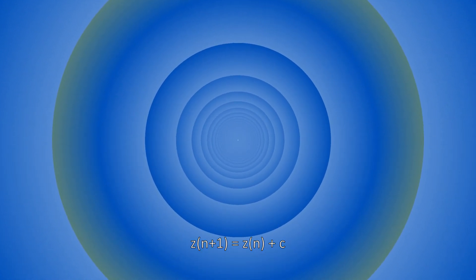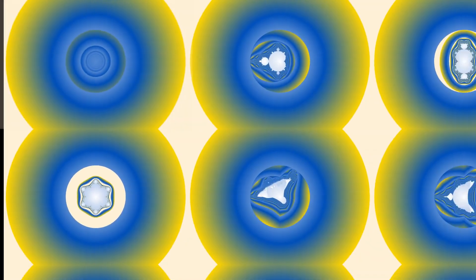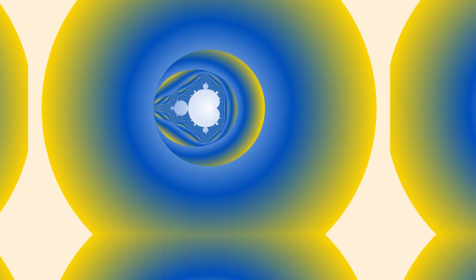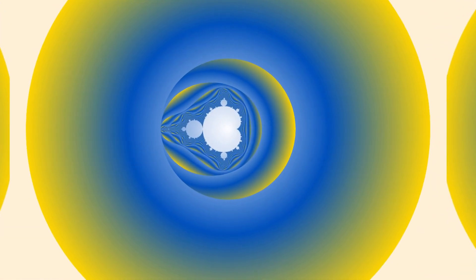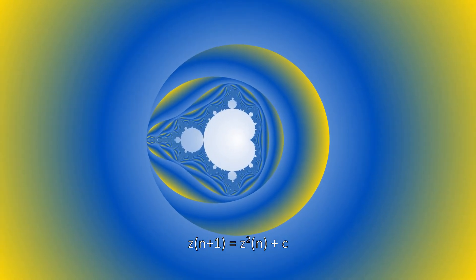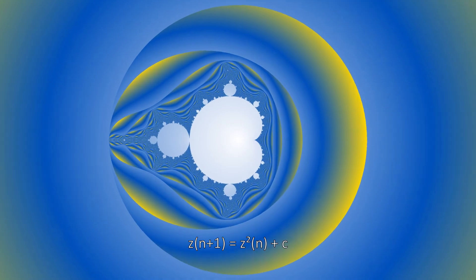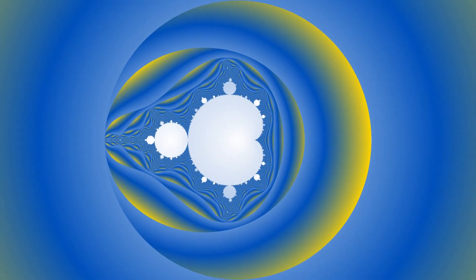You probably can't tell the difference between the different initial values. The second function is the venerable Mandelbrot set. The difference with the initial value is only visible because of the special coloring first used in this video.